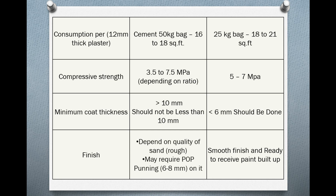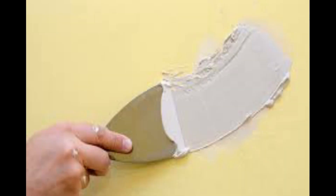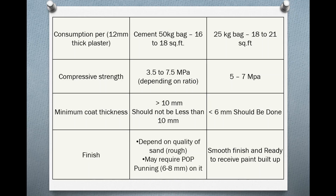Next: surface finish. Cement plaster provides a rough finish on its own. To achieve a smooth finish, we apply Plaster of Paris (POP) followed by wall putty, typically 6 to 8 coats, to cover the surface and finish it smooth. Gypsum plaster, however, does not require POP — we directly apply wall putty to achieve a smooth finish.